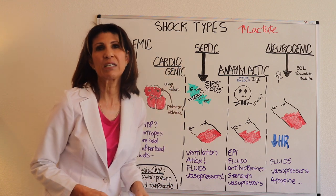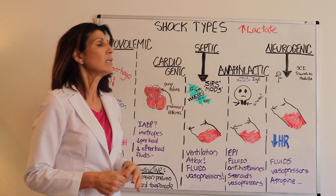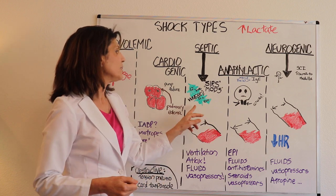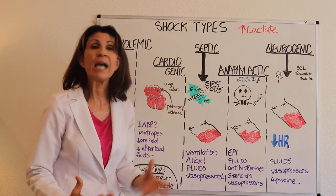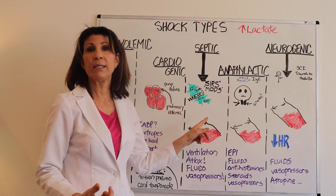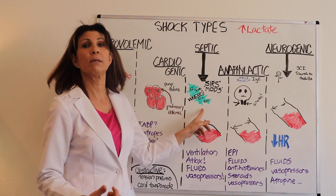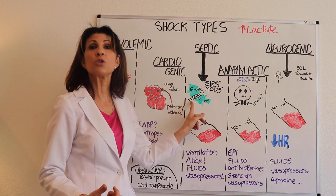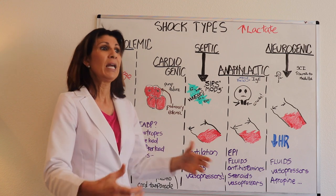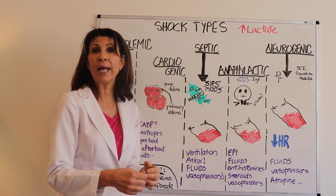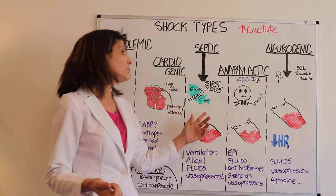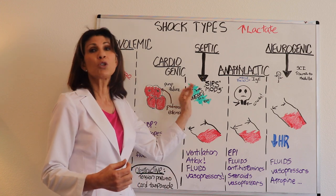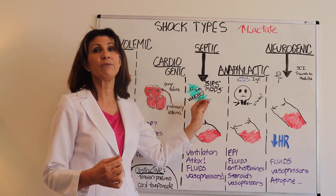Septic shock carries a very high morbidity and mortality rate. The system has been attacked by gram-negative or gram-positive organisms, and the challenge is identifying the source. If the patient has a central line, remove it. If there's an indwelling Foley catheter, remove it. Sometimes the source can't be removed — for example, an underlying pneumonia. Whatever the source, it must be addressed, which often means ensuring antibiotics are being administered.